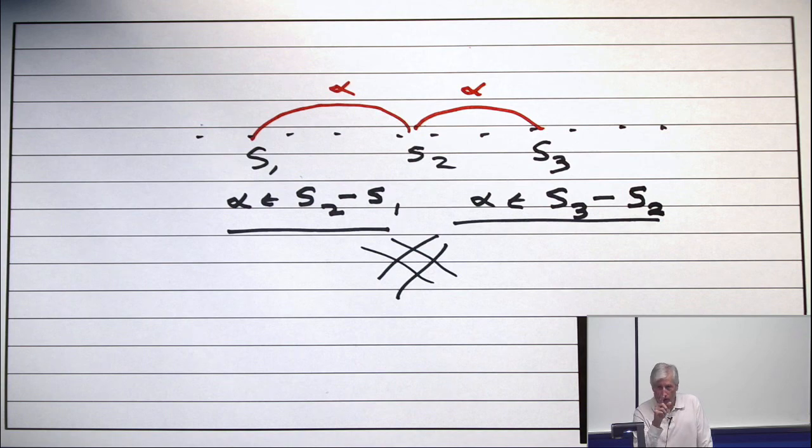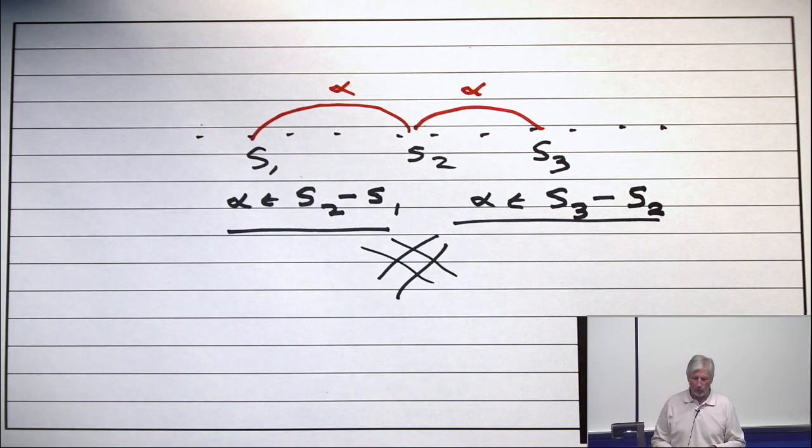And 2 to the T times 2 to the T minus 1 over 2 is 2 to the 2T minus 1. But that's still about like doubling. It's exponential growth. Whereas the first one is off the charts.